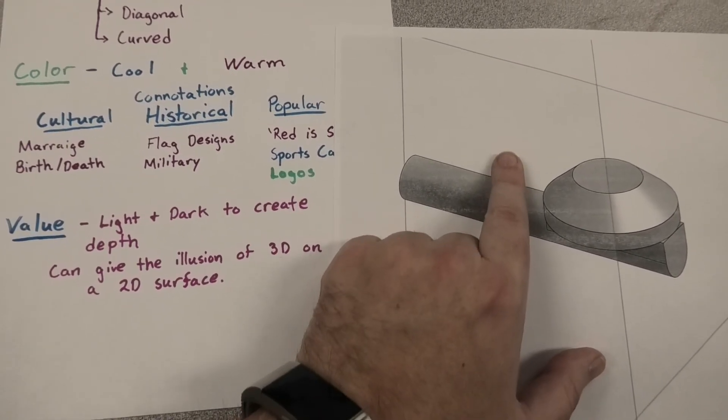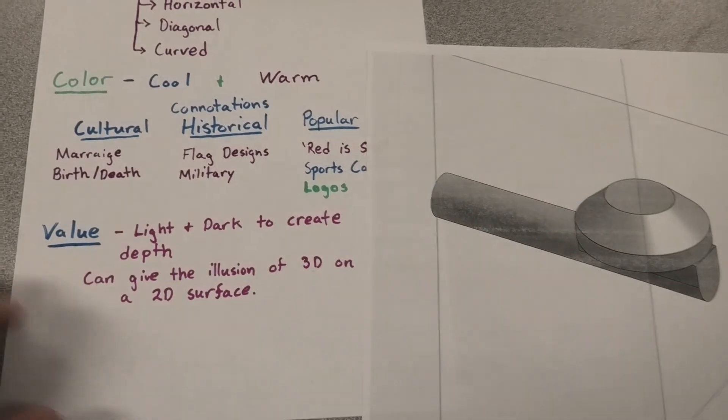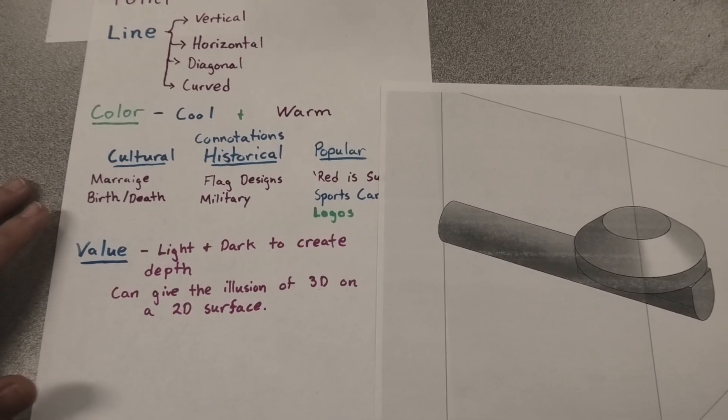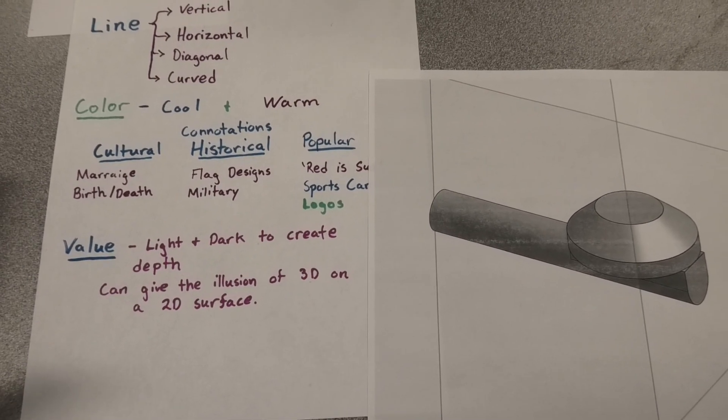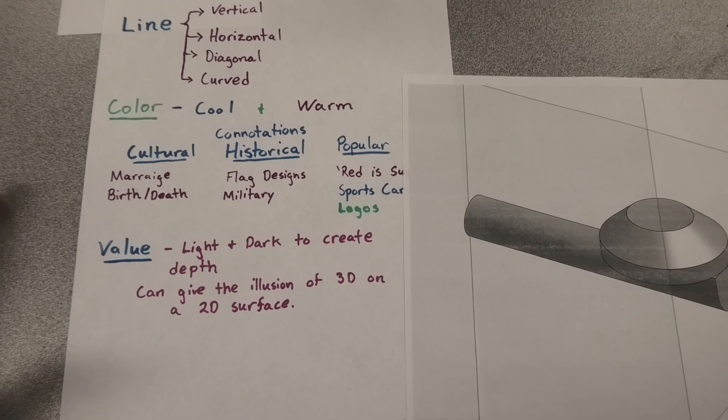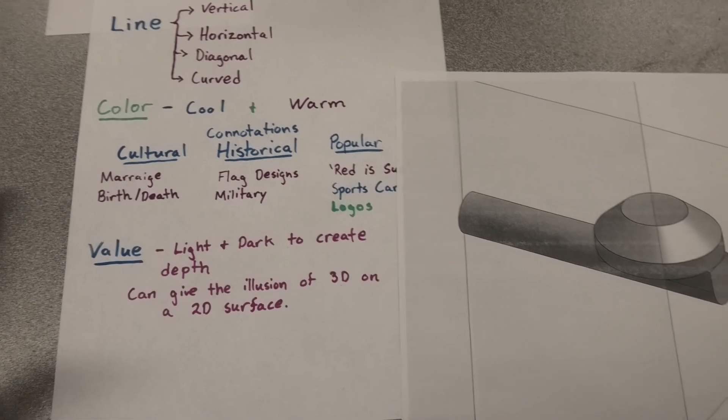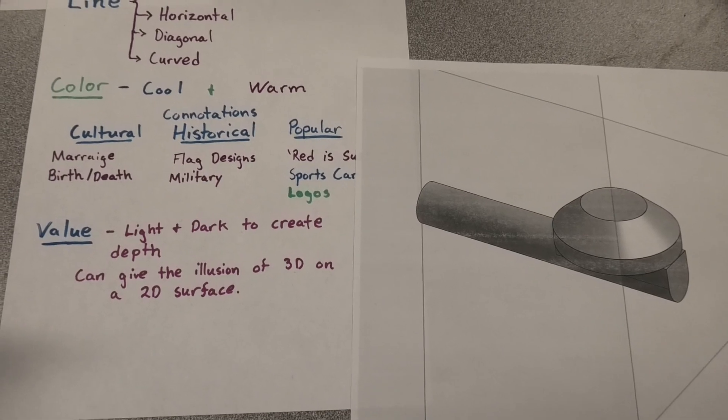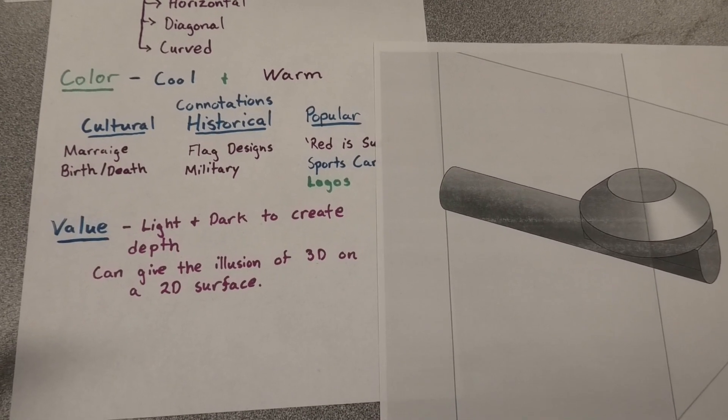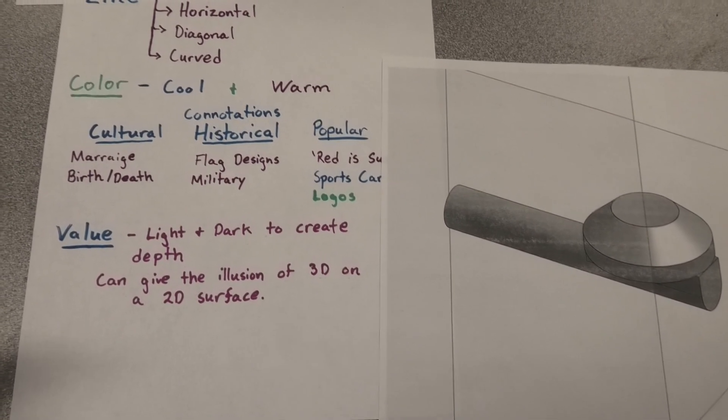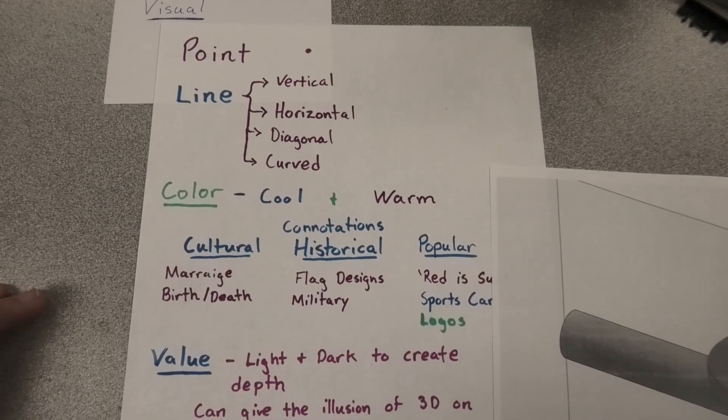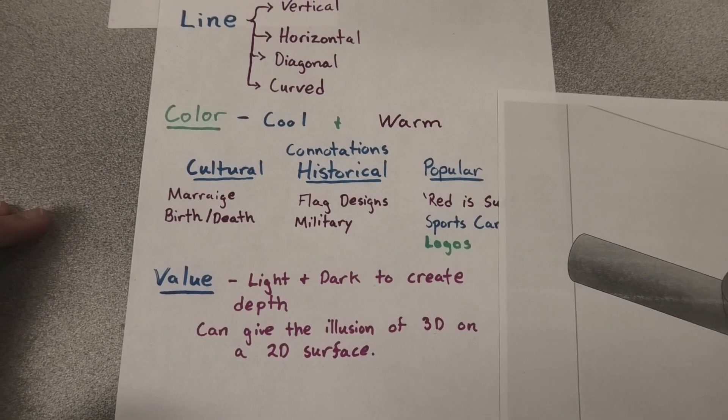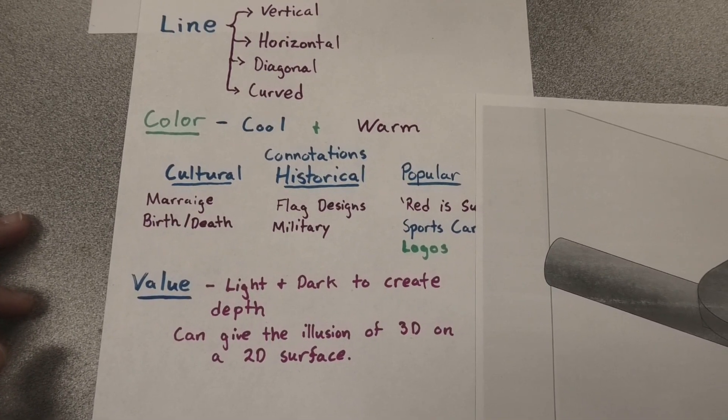So you'd have a lighter area on top, this is imagining that the light is coming in from the top of the object, and this is an example of how you can use value in an object. So you can either use it as lightness or darkness for the value, or in a 2D sense you can also use value to create an illusion of 3D even though it's on a two-dimensional object. We'll continue this later, but these are the first basic points for visual analysis: the points, the lines, colors, and values. I'll talk to you guys later, have a great day.